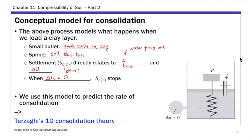The spring cylinder model is what I used last time to motivate this 1D consolidation theory. A key takeaway from this conceptual model is that the settlement at a particular time is related to the amount of water drained out and to the pore water pressure, specifically the excess pore water dissipation throughout the depths.